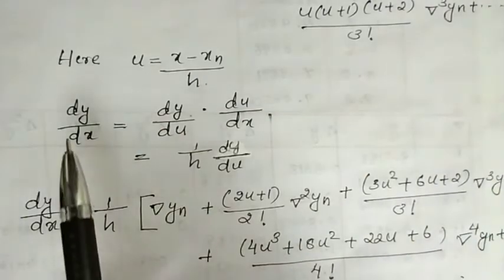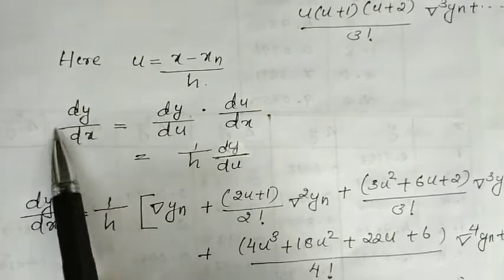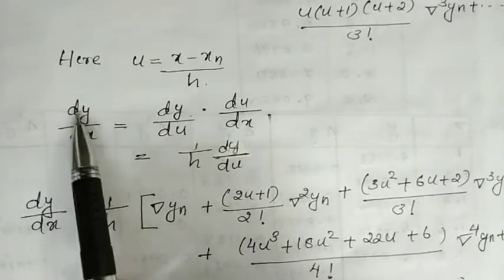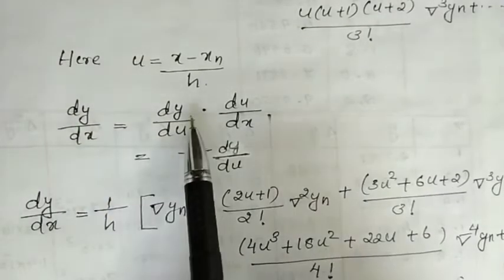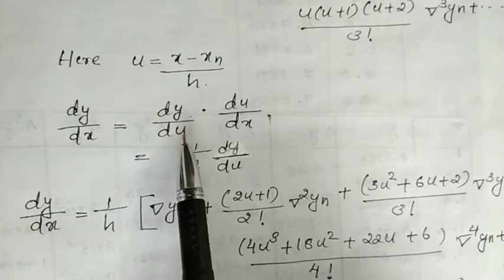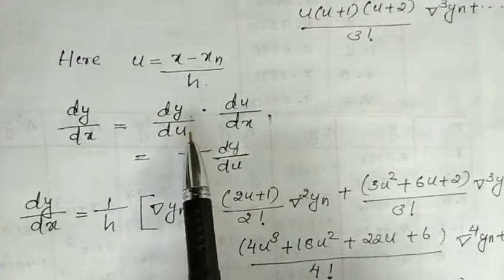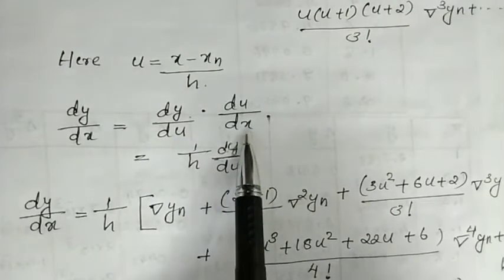Now, dy by dx — the derivative of y. dy by dx equals dy by du times du by dx.